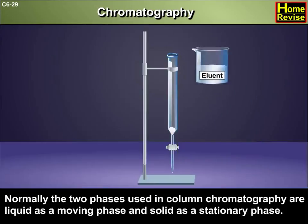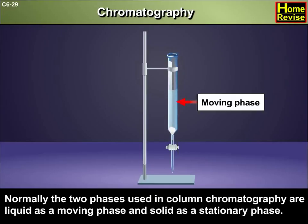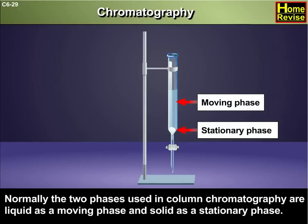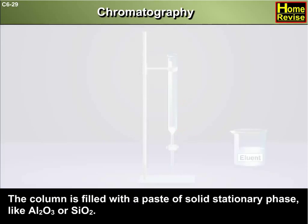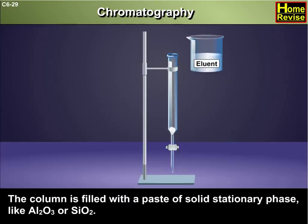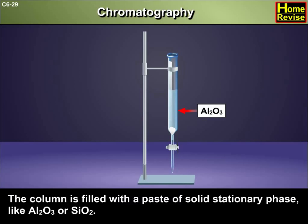Normally, the two phases used in column chromatography are liquid as a moving phase and solid as a stationary phase. The column is filled with a paste of solid stationary phase like aluminum oxide or silica.